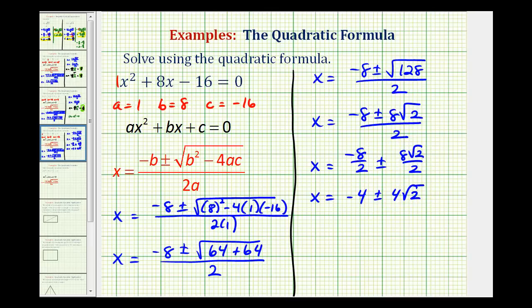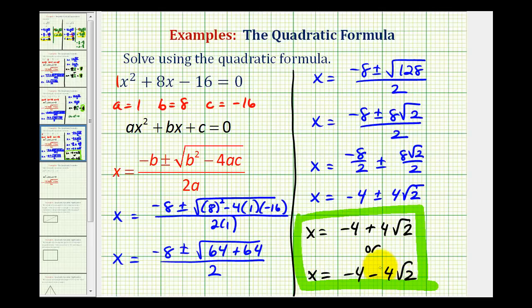So we have two real irrational solutions. One solution is x equals negative 4 plus 4 square root 2. Or x equals negative 4 minus 4 square root 2. So because we have two real irrational solutions, we could not have solved this equation by factoring.